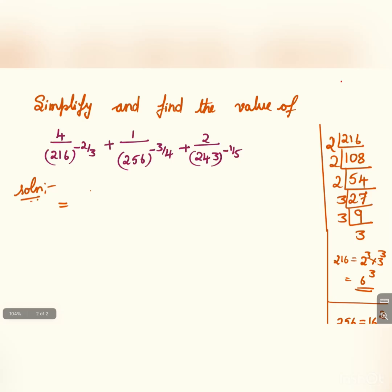Namaste everybody, welcome to my channel. Simplify and find the value of 4 by 216 to the power minus 2 by 3, plus 1 by 256 to the power minus 3 by 4, plus 2 by 243 to the power minus 1 by 5.